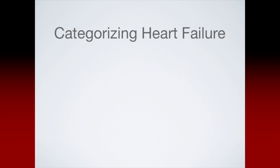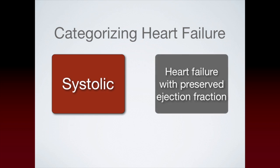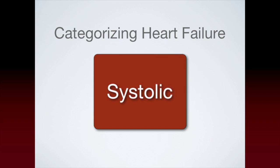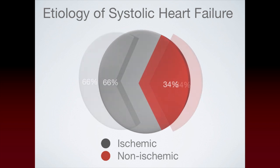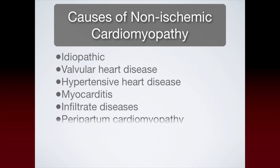Etiology. To be able to talk about etiologies of heart failure, we must first talk about how to categorize heart failure into main categories. We generally group heart failure into two main categories: systolic and diastolic heart failure. Diastolic heart failure is also known as heart failure with preserved ejection fraction. For the purposes of this module, we will be focusing primarily on systolic heart failure. With regard to etiologies of systolic heart failure specifically, about two-thirds of the cases are related to ischemic cardiac disease, such as myocardial infarction or chronic coronary ischemia, or non-ischemic cardiomyopathy. There are many causes of non-ischemic cardiomyopathy, and a full discussion of these is beyond the scope of this module.